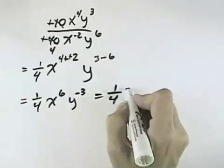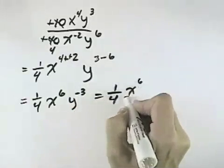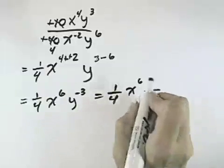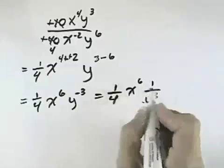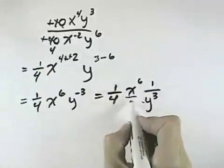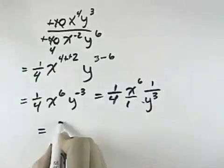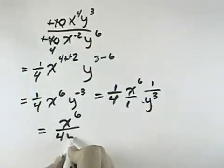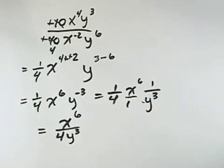However, when we have a negative exponent, that means we can put the 1 over y to the positive exponent, where the positive exponent would then be 3. So multiplying this out, I can make the x to the sixth over 1 to see that the x to the sixth is the only thing in my numerator, and I have a 4 and a y to the third power in the denominator.